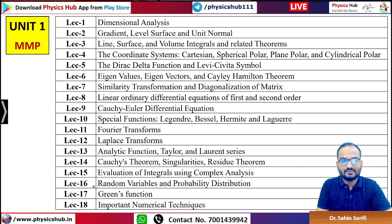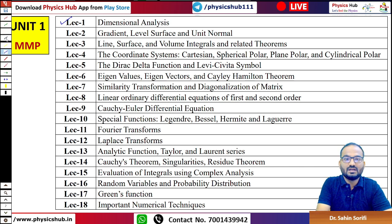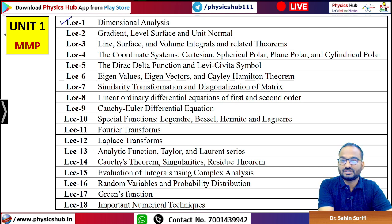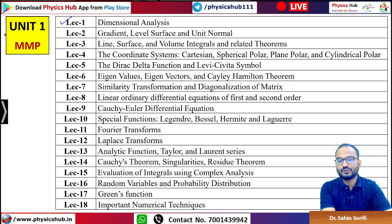Unit 1 is Mathematical Methods of Physics (MMP) and I have listed the 18 most important topics. These are topics, not lectures — a particular topic may have several lectures. It starts with dimensional analysis, gradient, level surface, unit normal, line/surface/volume integral theorems, coordinate systems, Dirac delta function, eigenvalues and eigenvectors, Cayley-Hamilton theorem, similarity transformation, diagonalization of matrices, linear ODEs (first and second order), Cauchy-Euler differential equations, special functions, Fourier transforms, Laplace transforms, analytic functions, Taylor and Laurent series, Cauchy's theorem, singularities, residue theorem, evaluation of integrals using complex analysis, random variables, probability distributions, Green's functions, and important numerical methods.